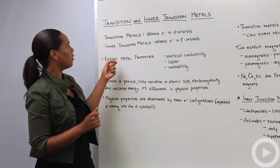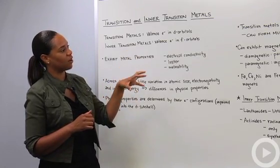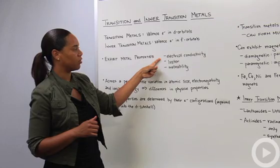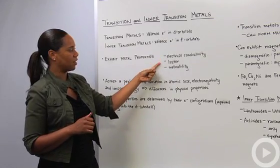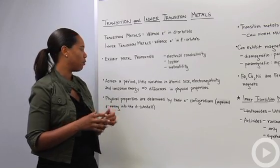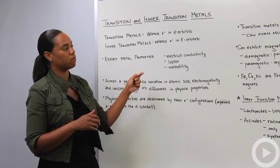So all these guys, both the transition metals and the inner transition metals, exhibit properties of the other metals that we see on the periodic table, meaning they are good conductors of electricity, they have a nice luster quality to them, and they're malleable which means they're soft and kind of pliable.